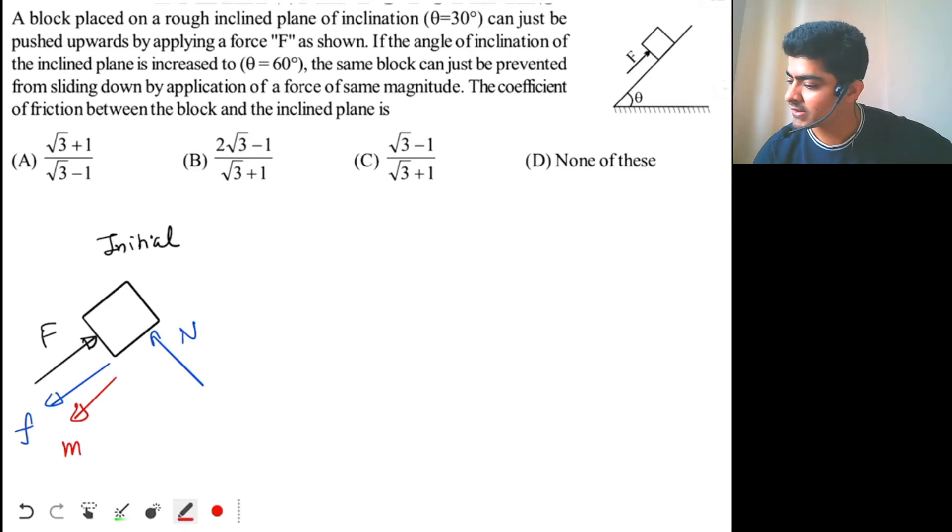mg sine theta means sine 30, so mg by 2. And here I have mg cos theta, so cos 30 degree will be root 3 by 2, so mg root 3 by 2.